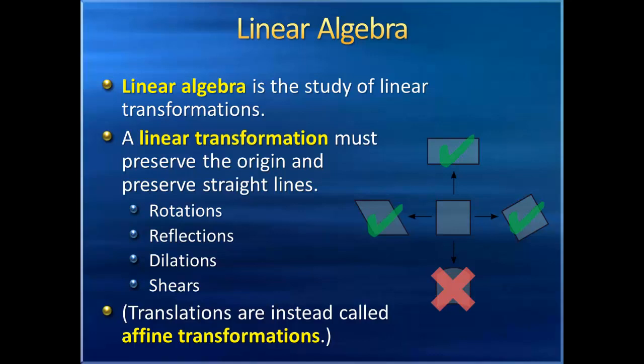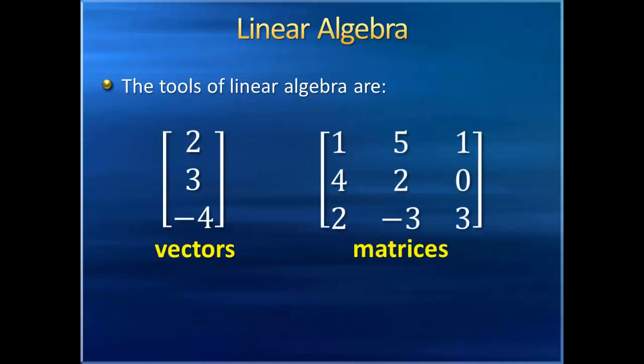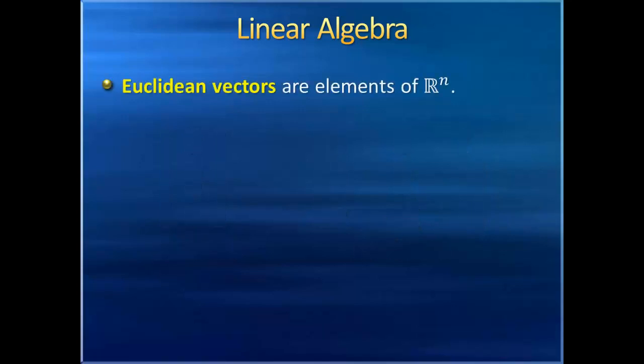Now this sounds very geometric in nature, so where does the algebra come in? Well, the tools we often work with in linear algebra are vectors and matrices. Usually when we first talk about vectors, we mean Euclidean vectors, which are basically elements of R to the n, that is, n-tuples of real numbers. Given the world in which we live, we most often find ourselves working with R squared and R cubed. So in linear algebra you'd be getting to know these two spaces very well. Though it's not uncommon to work with higher dimensions as well.